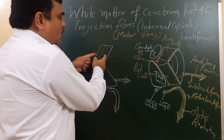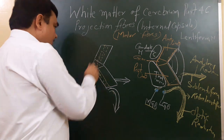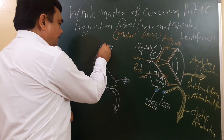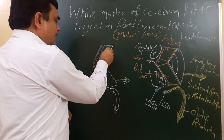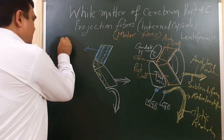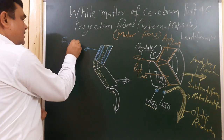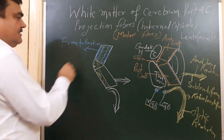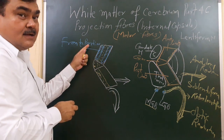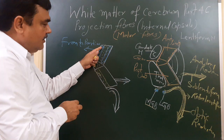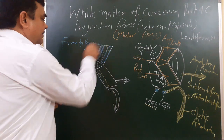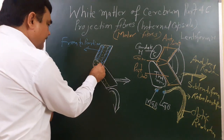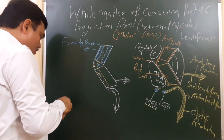The frontocontine fibers arise from the frontal lobe and are known as frontocontine fibers. These corticocontine fibers arise from the frontal lobe and pass through the anterior limb. From the genu, the fibers are corticonuclear fibers.